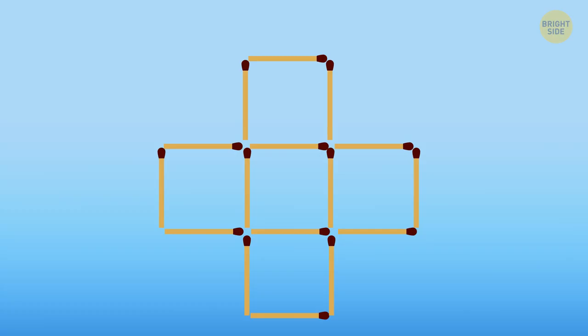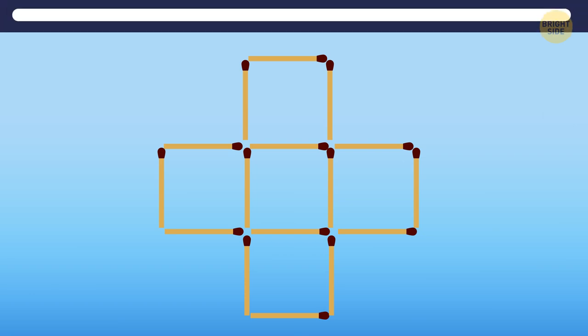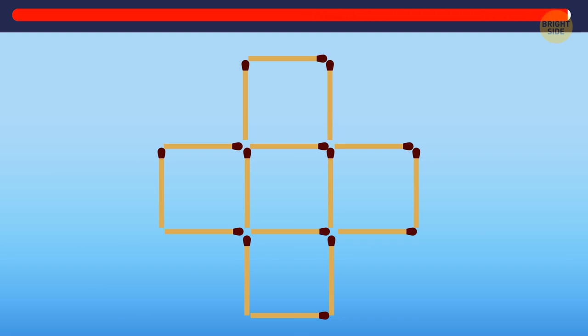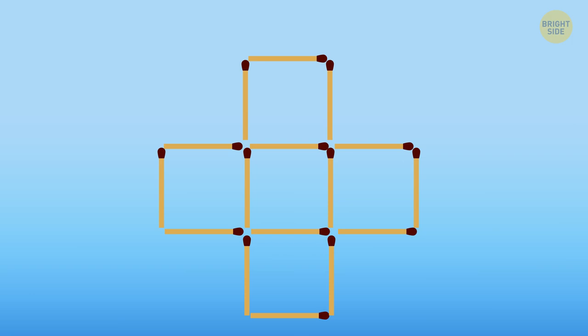Take a look at these matchsticks. There are five identical squares. Can you form six identical squares by moving just three matchsticks? Keep in mind that you're not allowed to let them overlap or break the matchsticks. Here's the way. Take these three matchsticks at the bottom and place them vertically in the center of the squares in the middle row. Voila! Now you have six identical squares.